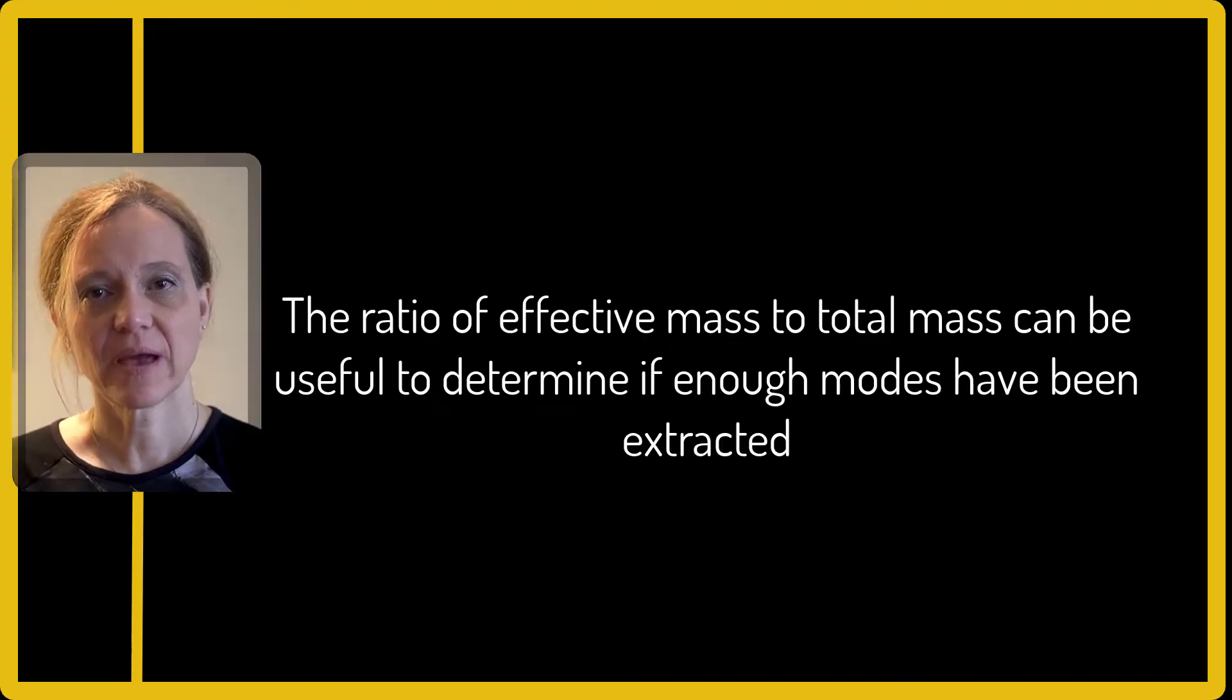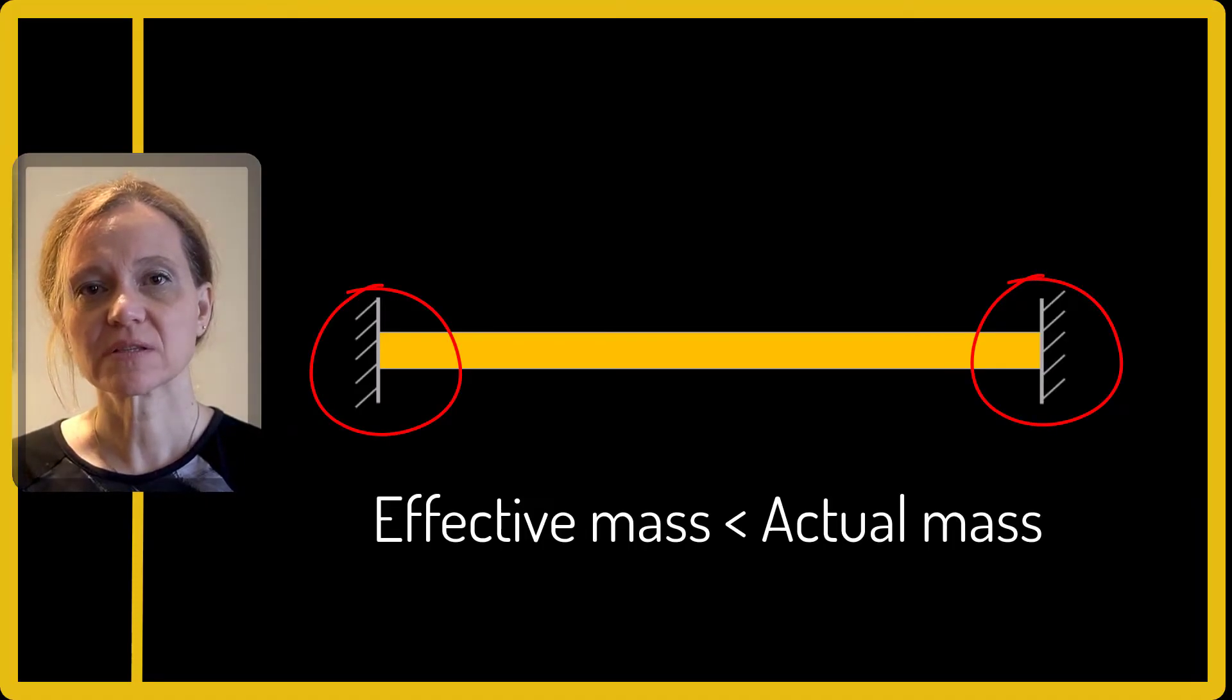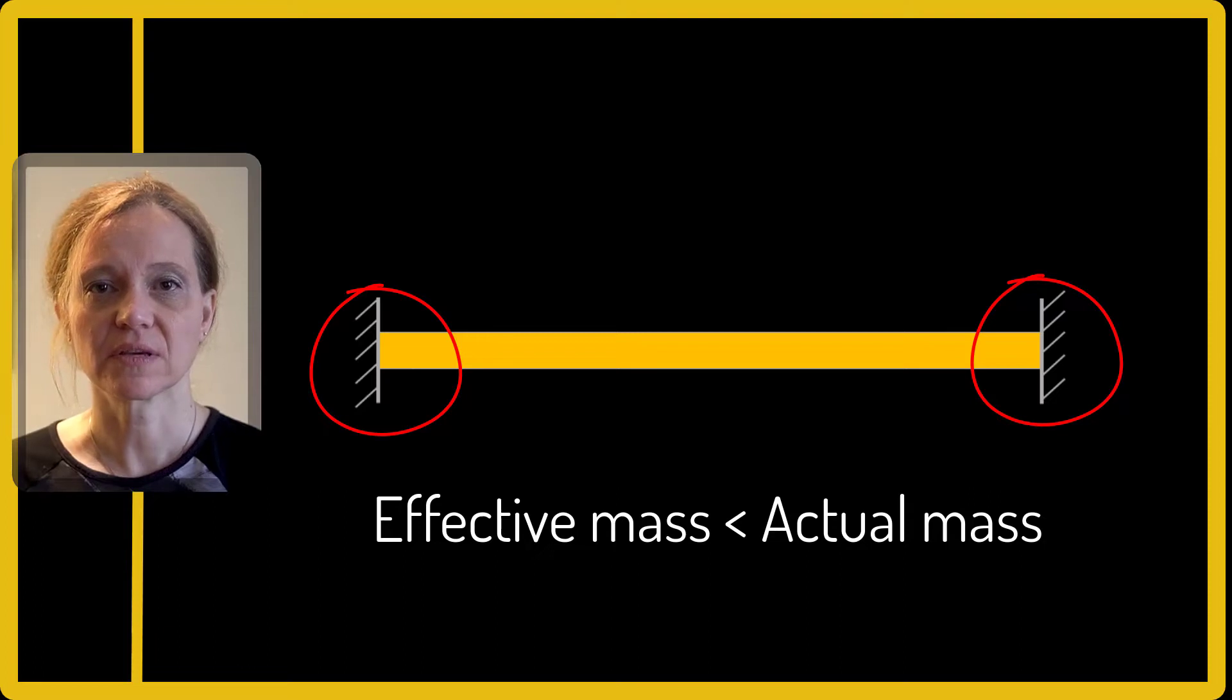The ratio of effective mass to total mass can be useful for determining whether or not a sufficient number of modes have been extracted. The material near the supports is generally less likely to move, so effective mass will be smaller than actual mass of a structure based on how much material is located near fixed supports.